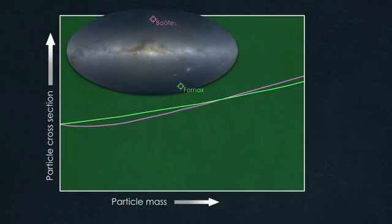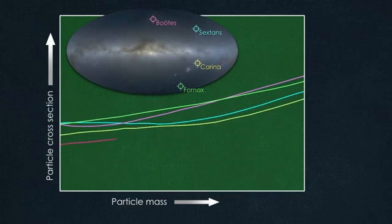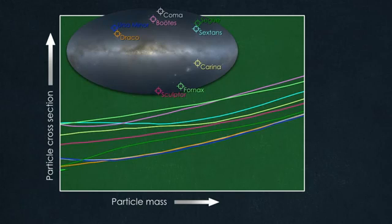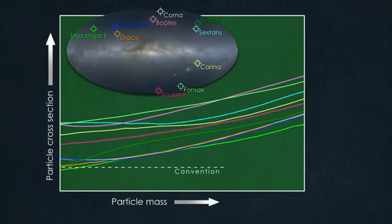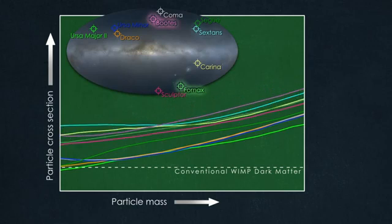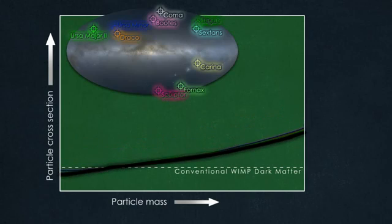Using two years of data, Fermi scientists explored ten dwarf galaxies for any sign of gamma rays from WIMP annihilation. In this graph, the dashed line marks the sweet spot where conventional expectations for WIMP dark matter align with what we know about our universe. Even when scientists combine all of the Fermi data from all ten of the dwarfs, they see no sign of gamma rays.